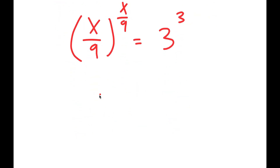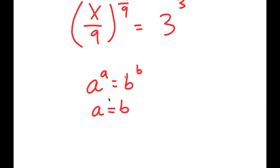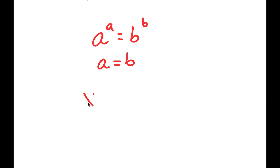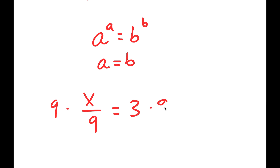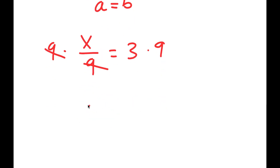Now, if something is in the form a to the power of a equals b to the power of b, this means that a equals b. So in this case, x over 9 is equal to 3. And if I multiply both sides by 9, these cancel out, and I get x is equal to 3 times 9, which is 27.